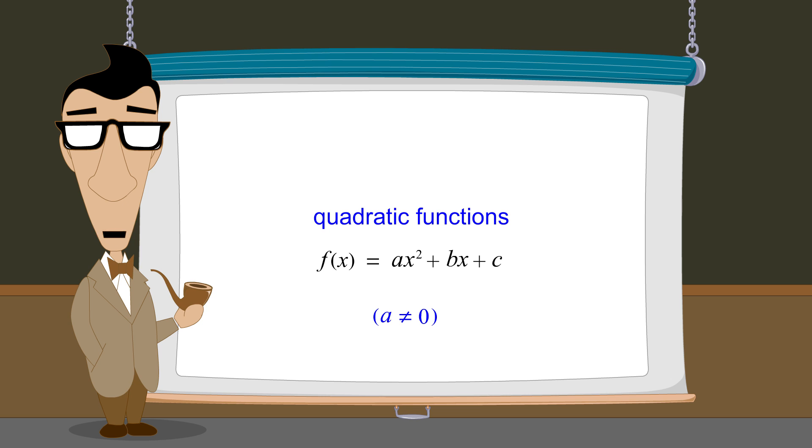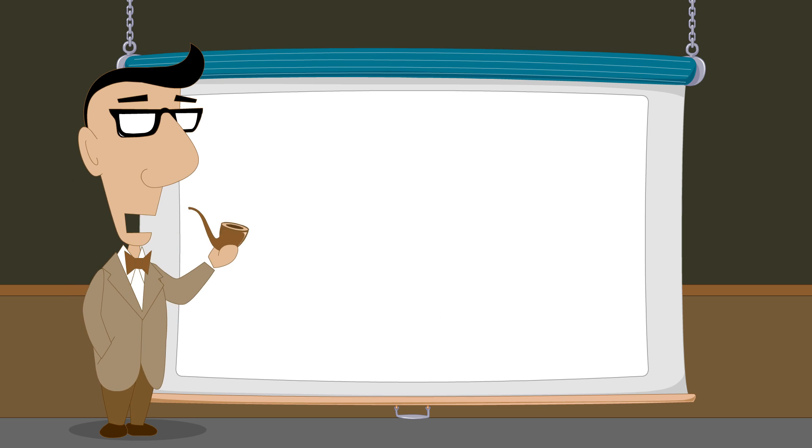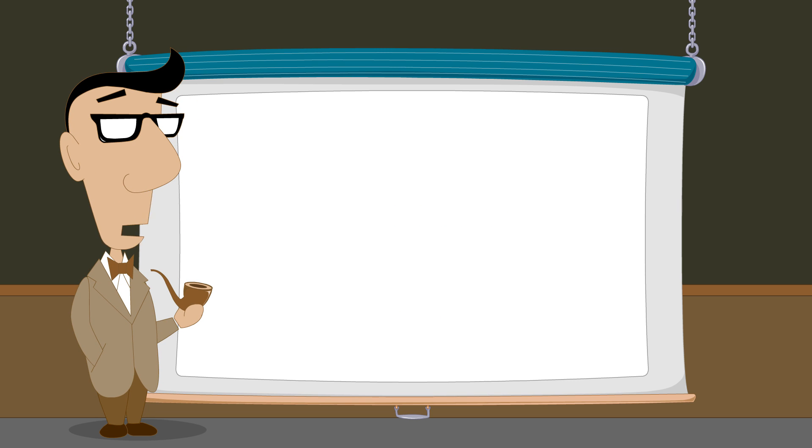A quadratic expression can be created by multiplying two linear expressions together. As an example, let's multiply two linear expressions 3x plus 4 and 2x plus 1.